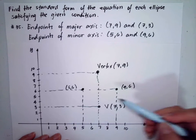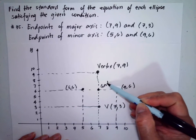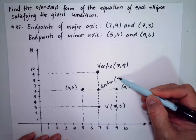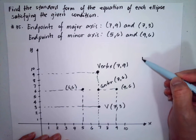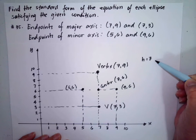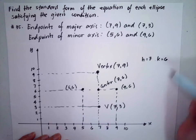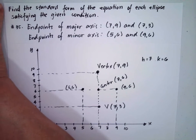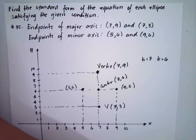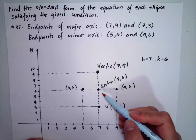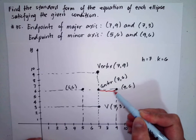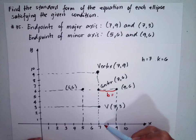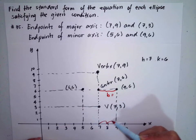Now, as we can see, this is our center. Our center is (7, 6). So therefore, h is 7 and k is equal to 6. The minor axis represents the measurement of b.